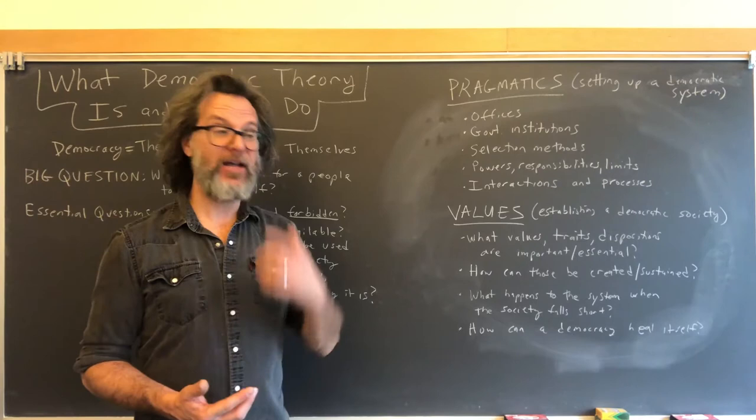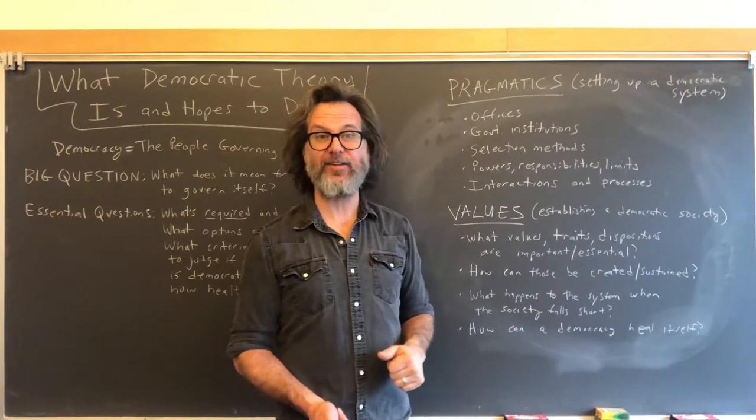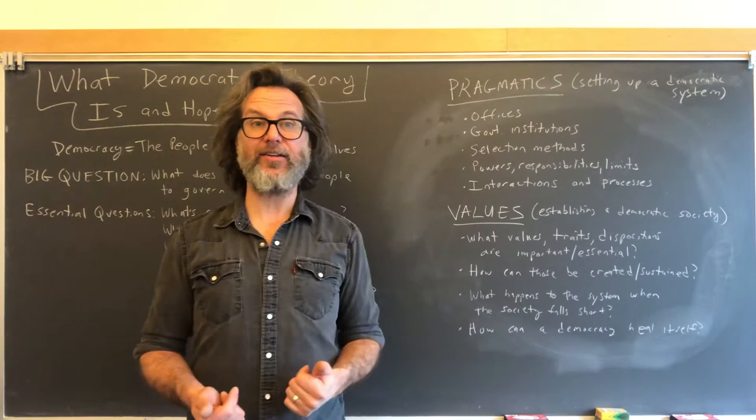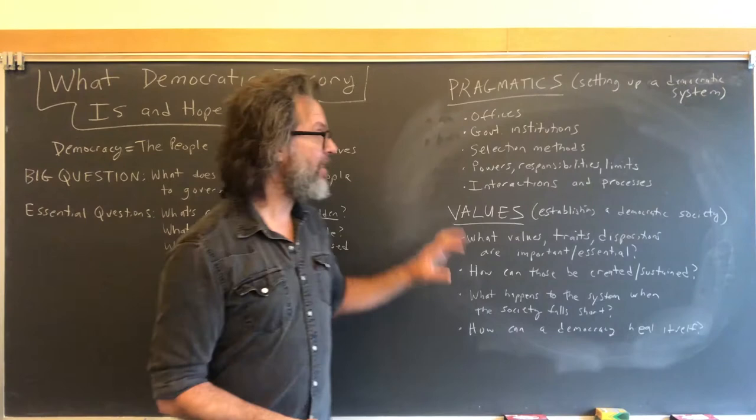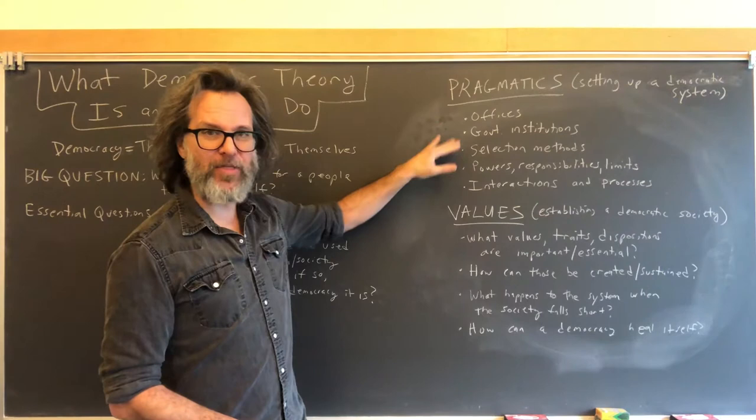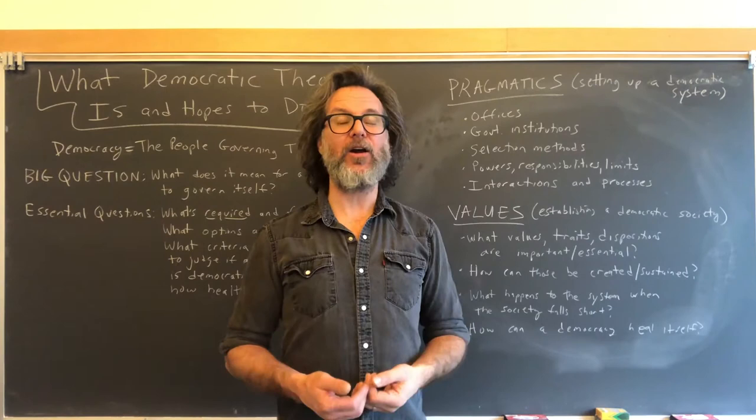Offices are not all elected offices. An office is any position within a government institution that has power, responsibility, and discretion. Another aspect of the pragmatics is what are the powers, responsibilities, and limits of these institutions and offices. And finally, what are the interactions and processes? How do different offices and institutions interact with each other, limit each other, share or divide responsibility, and parse out power? What processes lead from action to outcome?